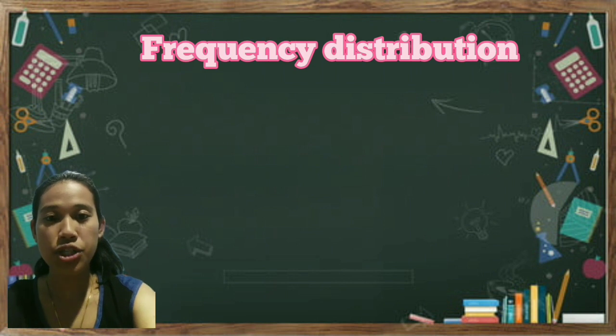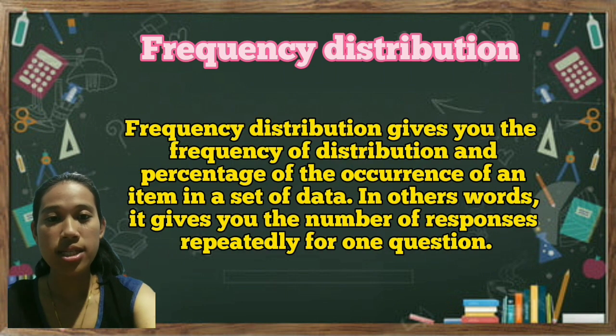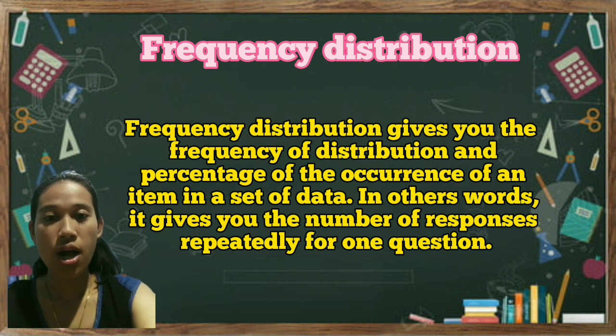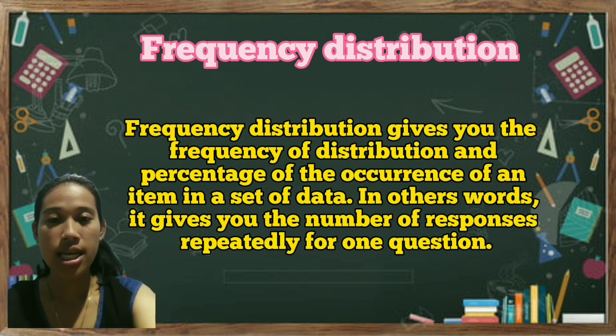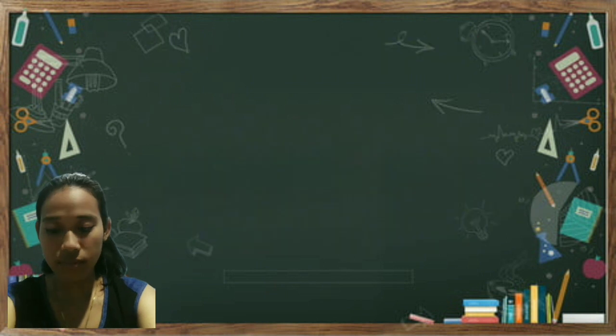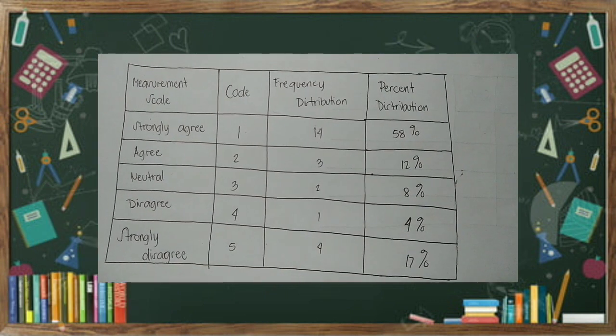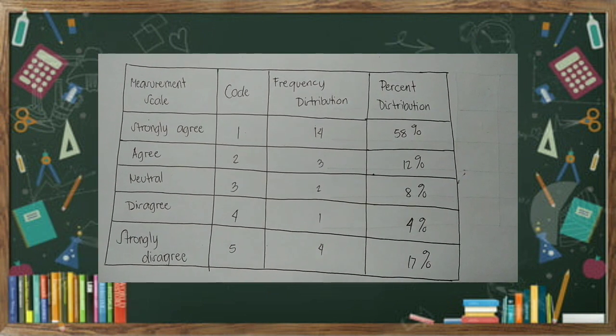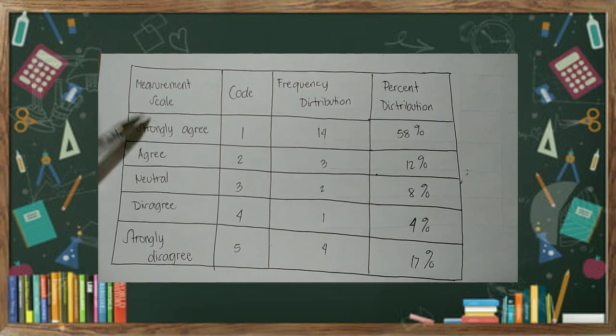The first statistical tool is frequency distribution. Frequency distribution gives the frequency of distribution and percentage of the occurrence of an item in a set of data. In other words, it gives you the number of responses repeatedly for one question.